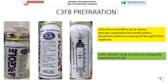This is how a C3F8 cylinder looks. An air filter is used for obtaining sterilized gas for air Desmatopexy. A 14% mixture of C3F8 to air by volume is the ideal gas composition to achieve tamponade without increasing IOP through further expansion. C3F8 is diluted 7 times to achieve an iso-expansile concentration of 14%: 0.1 ml of C3F8 gas is aspirated from the cylinder using an air filter in a tuberculin syringe, then completed with room air up to the 0.7 ml mark. If a 2 ml syringe is used, 0.2 ml of C3F8 is aspirated and completed with room air up to the 1.4 ml mark.